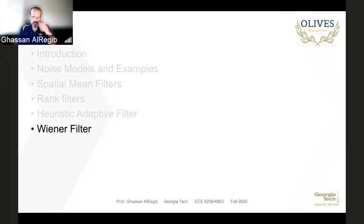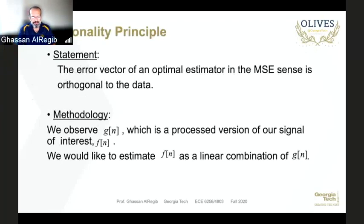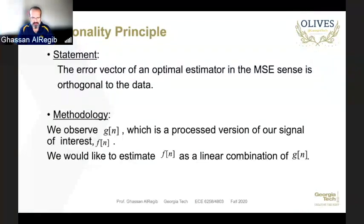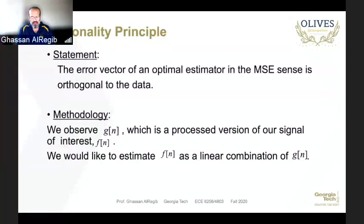Today we'll talk about Wiener filtering. The main principle — I will not spend time deriving it, as some other courses cover this in quite a bit of time — is called the orthogonality principle. In this case, what this principle tells us is that if we are trying to find an optimal estimator, optimal in the sense of mean square error,